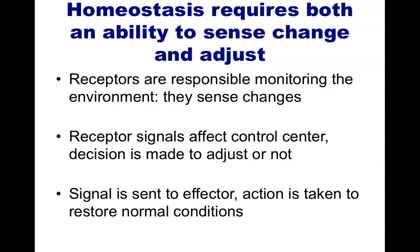We can generalize this process for changes beyond just temperature. Homeostasis requires three general steps. First, some receptor detects the change in the environment. Second, the receptor signals to some control center, which recognizes if the change is too big or requires a response. If a response is needed, a signal is sent to what is known as an effector, and an action is taken to restore normal conditions.